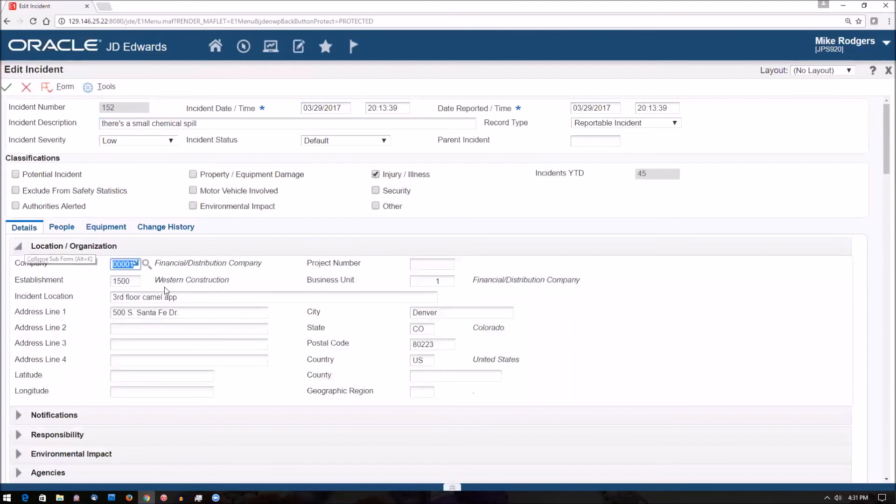Let's check the location. Alright. We said that it was on the third floor chem lab. It got camel app. So we can correct that pretty easily. And also let's go ahead and take a look at the people tab.